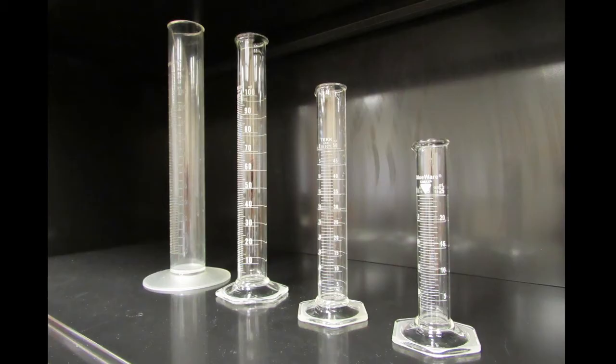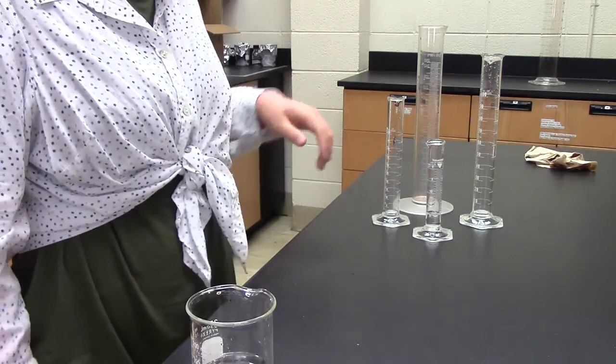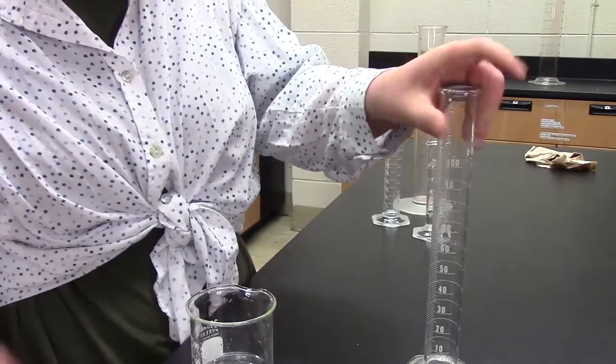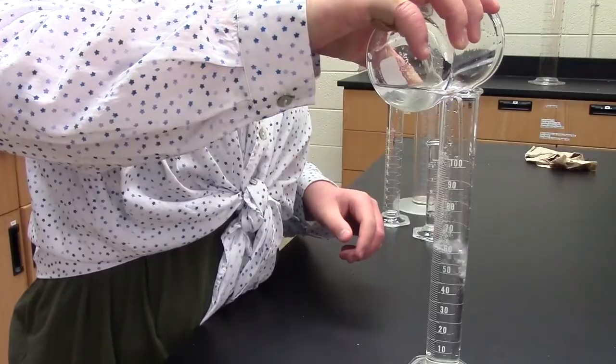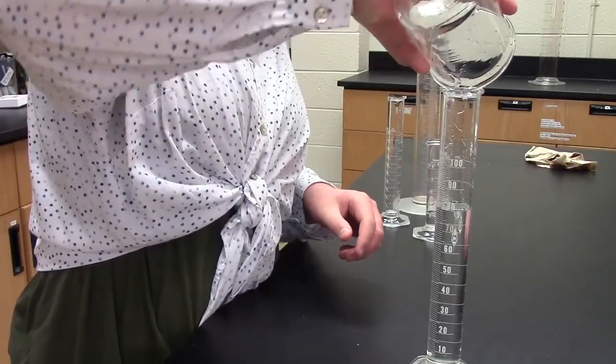There are many different sizes of graduated cylinders, from this little one all the way up to this giant one. Be sure to choose one that will hold all of your solution in one go, but not one with a capacity far beyond what you actually need. For example, if I need to measure 80 mL, I'll choose a 100 mL graduated cylinder, and if I need to measure 800 mL, I'll choose a 1000 mL graduated cylinder.